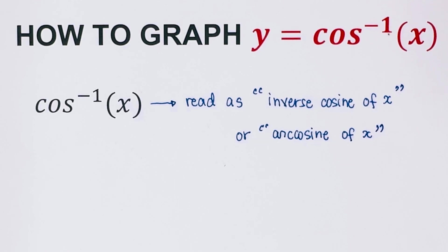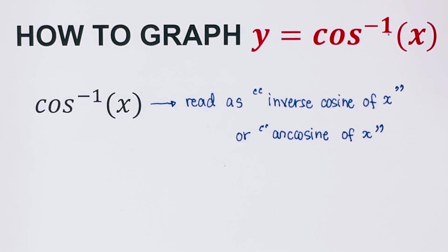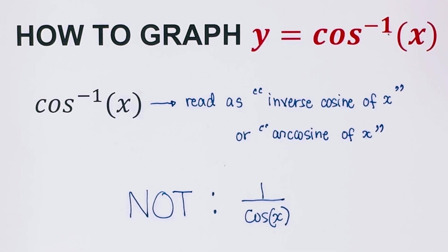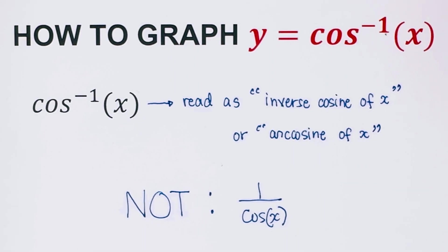Now we remember that this notation is not the same as one over cosine x, because one over cosine x is secant x. Now let's jump right into how we sketch the graph of y equals inverse cosine of x.